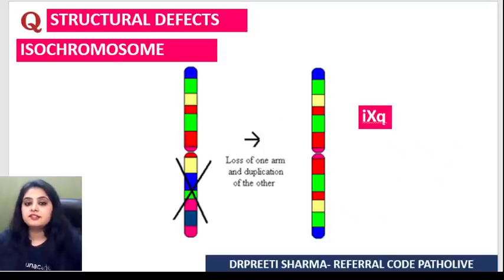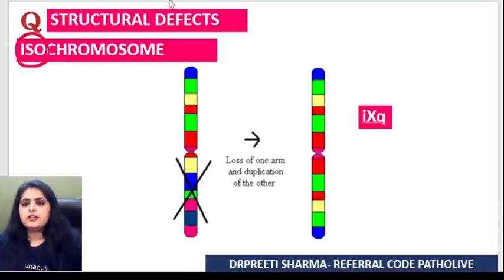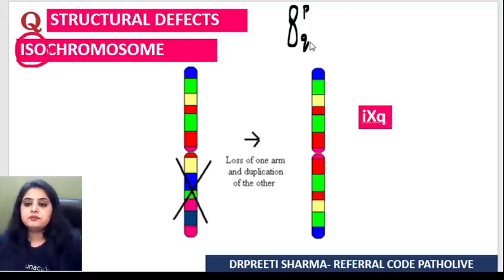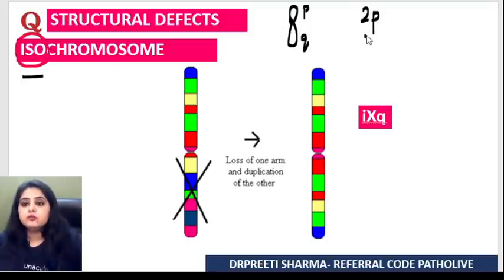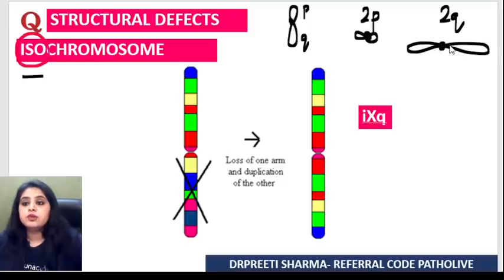Coming to the next: isochromosome. The word 'iso' tells me 'same.' Every chromosome has a short arm (P arm) and a long arm (Q arm). An isochromosome is one which either has two short P arms or two long Q arms — that is iso.